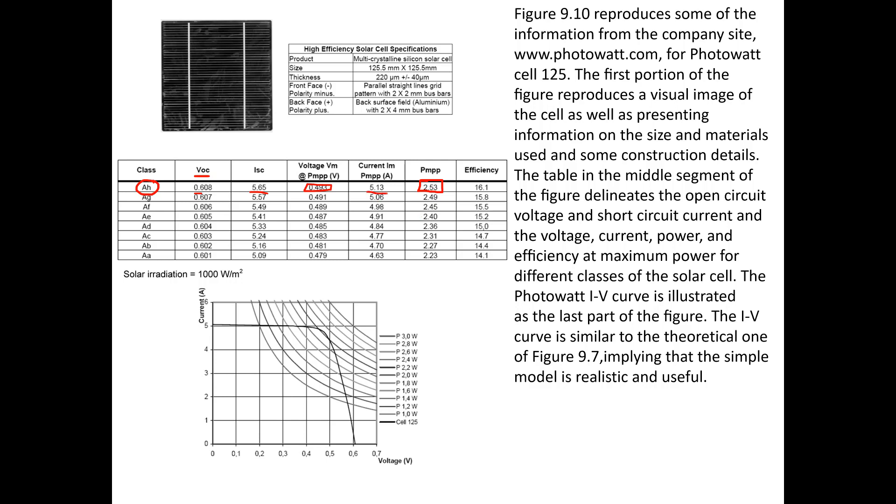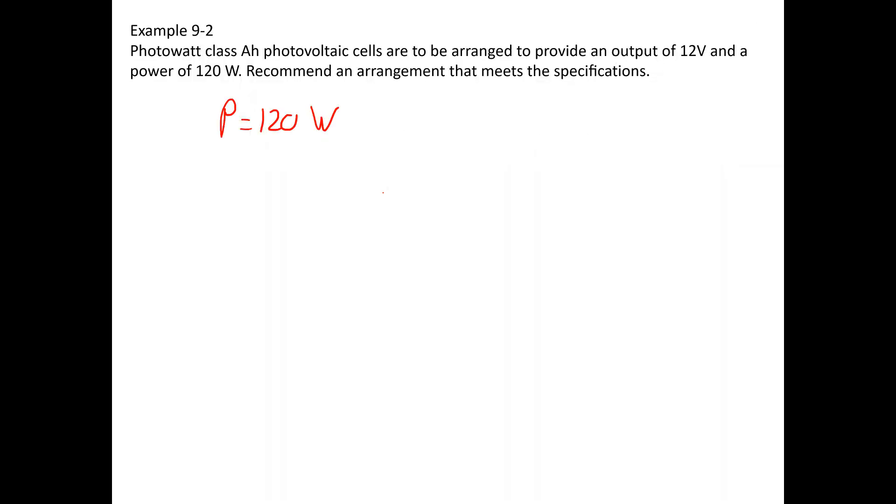So if we take that information back to the example problem, we can go ahead and first compute the number of cells that's needed. So if I want 120 watts, and I know that each cell produces 2.53 watts, I know that I need, this is an exact calculation of course, 47.4 total cells.